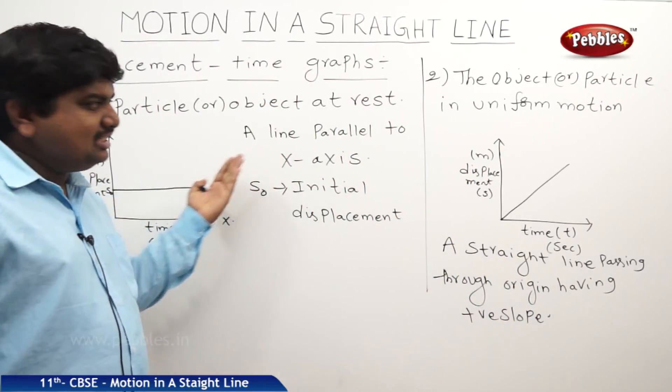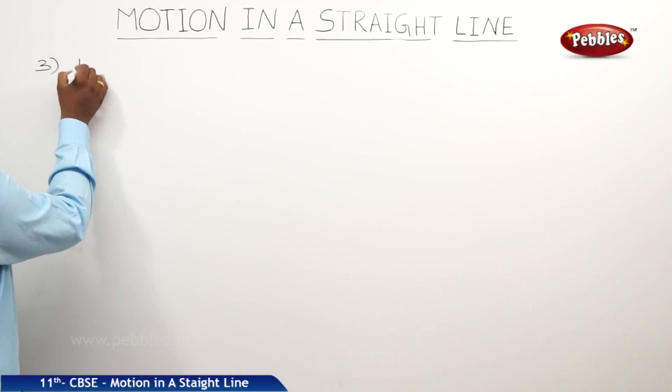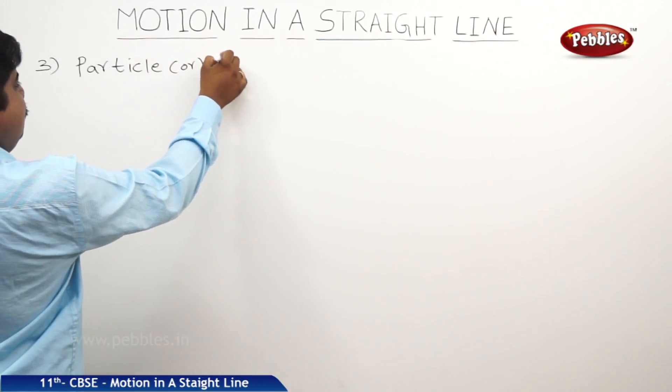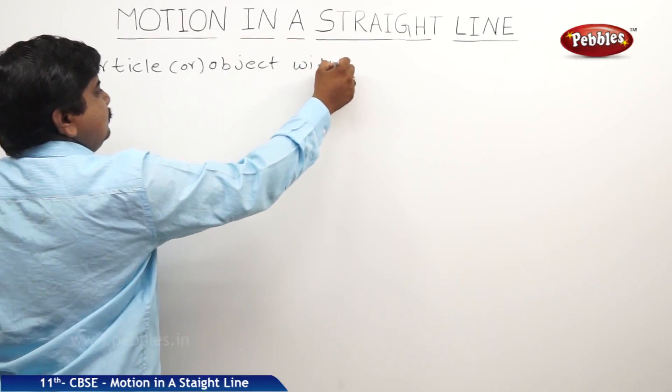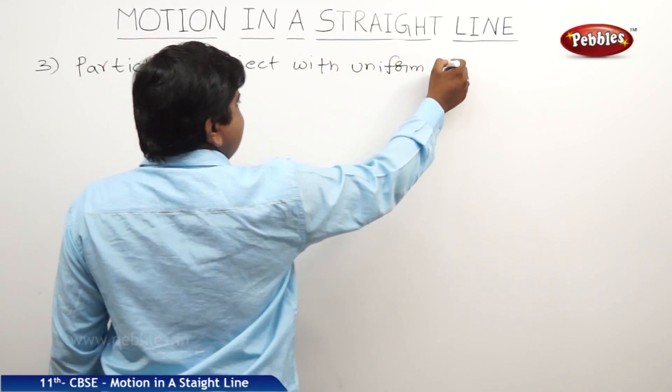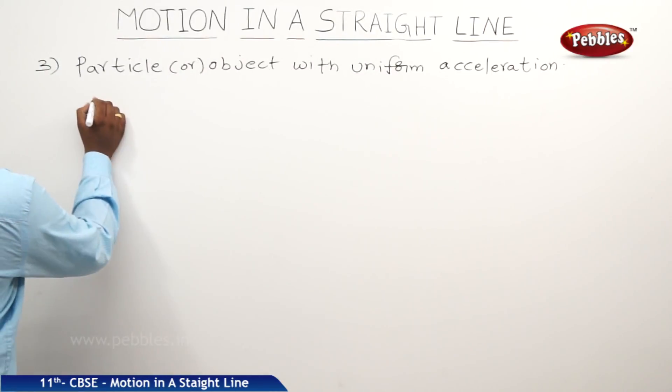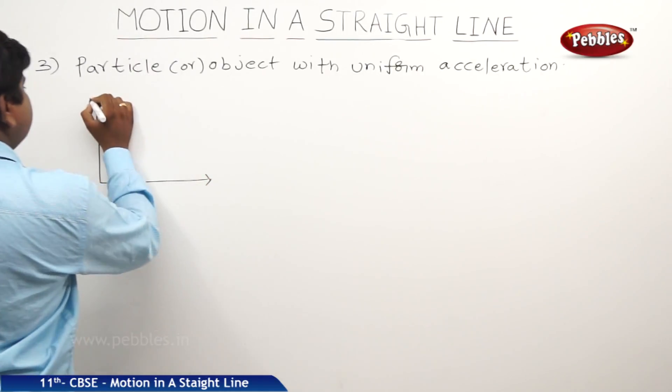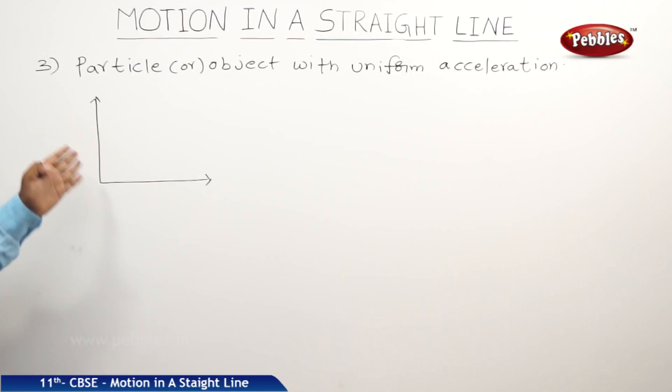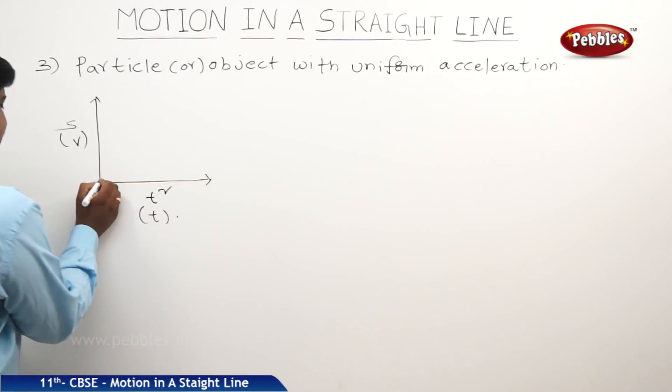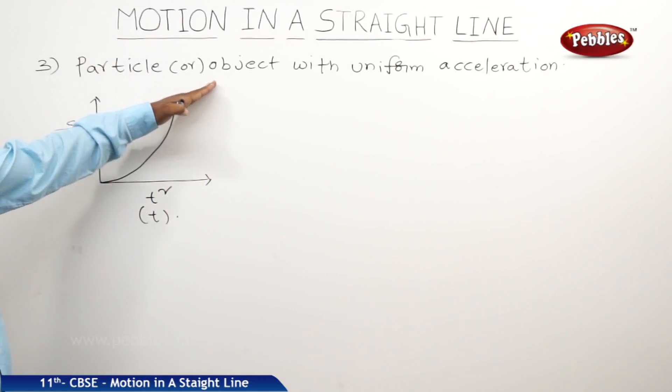There are many other situations we will see one by one. Third example and the third nature is particle with uniform acceleration. Particle or object with uniform acceleration. The nature of the graph will be like this. If you are taking displacement on y axis, we should take the t square on x axis because acceleration formula is meter per second square. Here it is t square. Or we can take v or t. In this case, the nature of the graph will be like this. Means it is an exponential growth have positive slope.